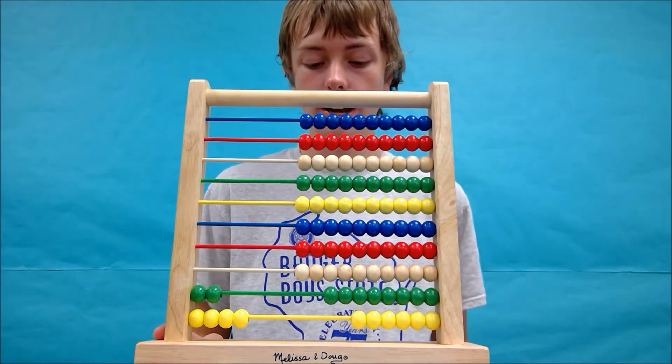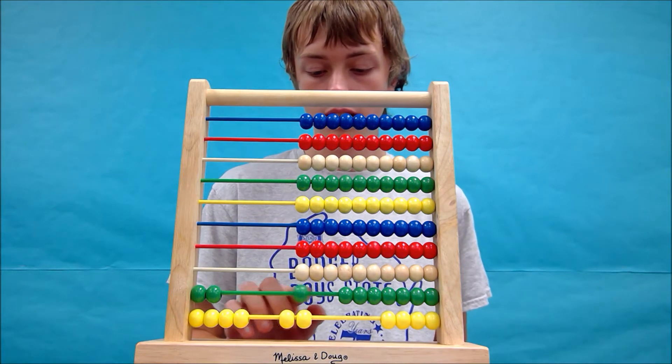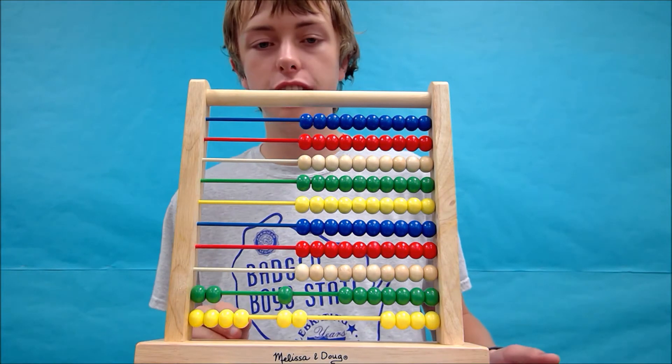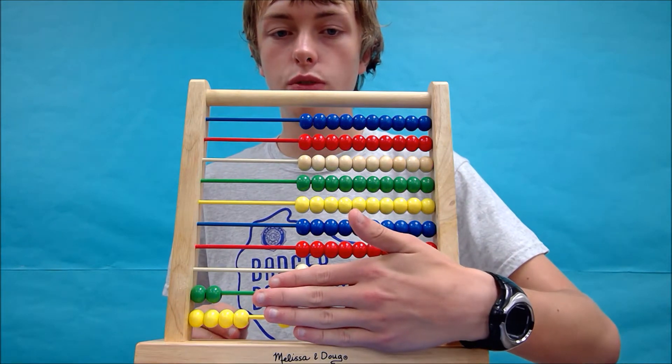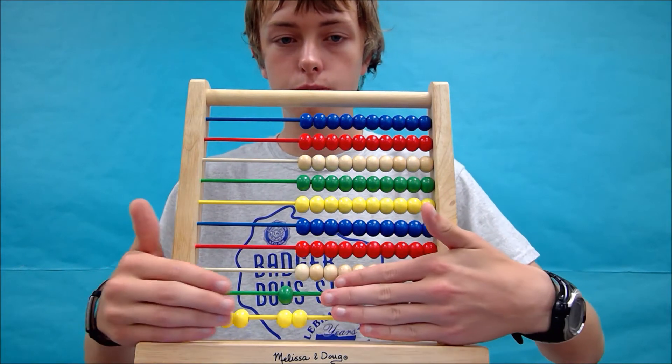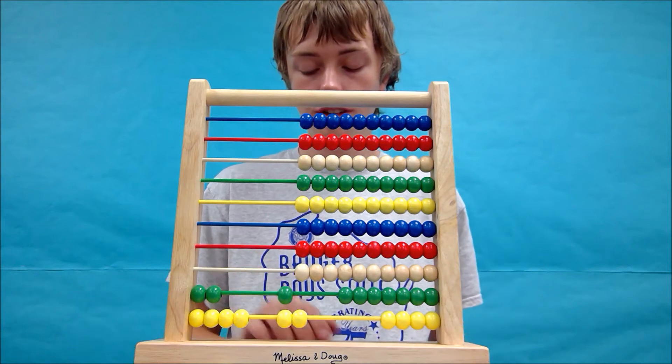There's our 24 and we're going to add 12. So you can tell here really easily that we have 24, two beads, four beads, plus 12, one bead, two beads.